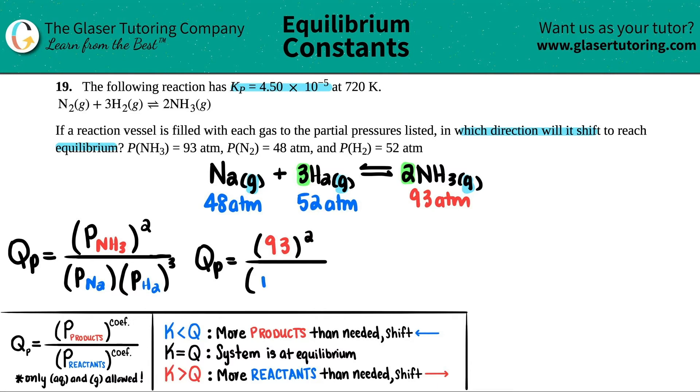Divide it by N2. It was 48. 48. Close that off. Times by H2, which is 52. And this is raised to the third. So let's see. Let's see what number we get for the top and what number we get for the bottom. 93 squared is 8,649. 8,649.